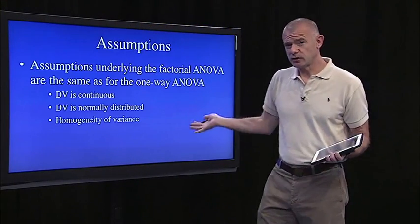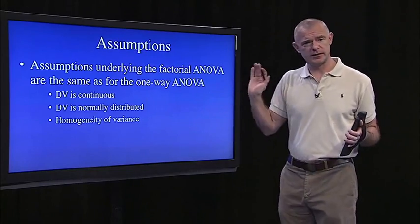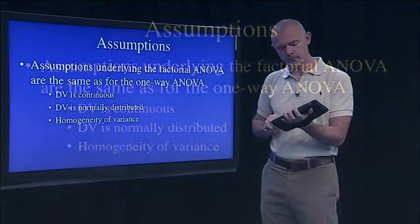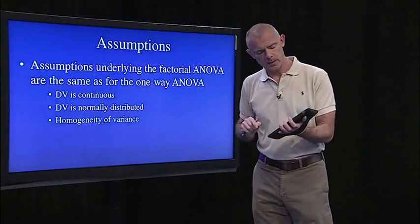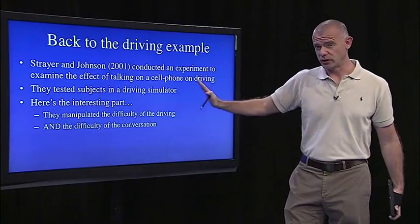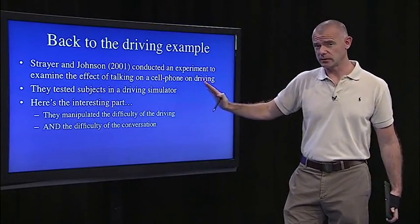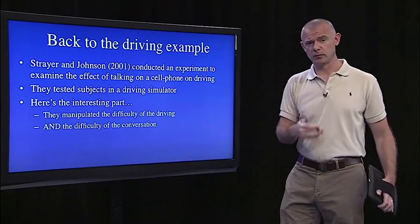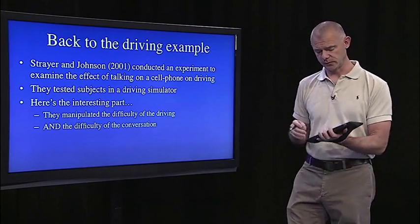The assumptions underlying factorial ANOVA are the same as those underlying one-way ANOVA: we need a continuous DV, we assume it's normally distributed, and we assume homogeneity of variance. We could test the homogeneity of variance assumption by doing Levene's test, and we'll do that in lecture 15.